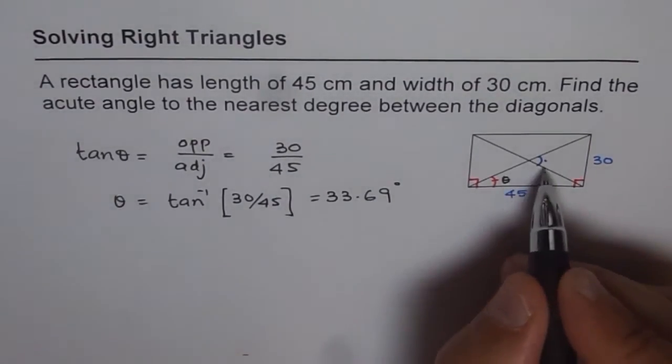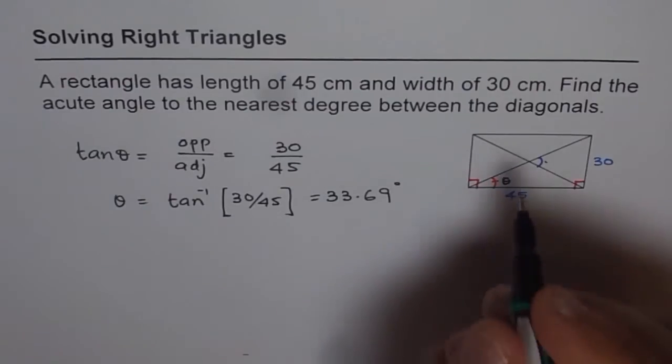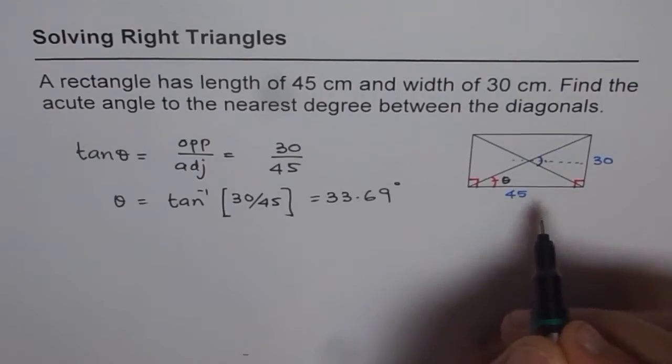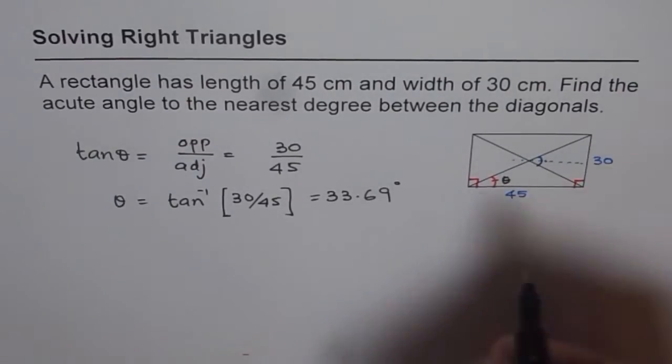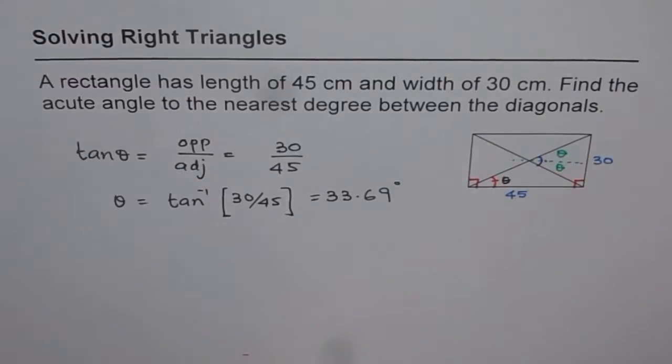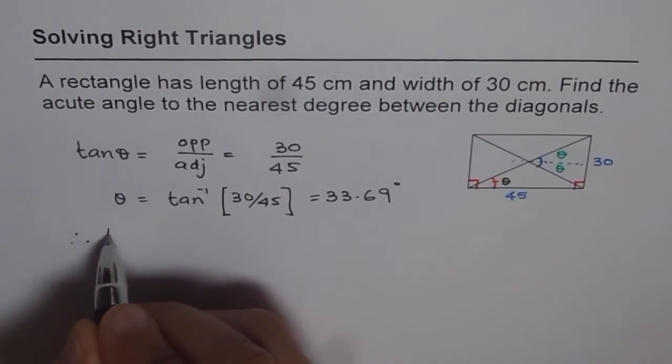Now how is this angle related with the acute angle which we are interested in finding? One way is we can draw a line parallel here and we know if this is theta and the line is parallel that becomes a transverse line then we have theta here and theta here. So the acute angle which we are talking about is 2 times theta.